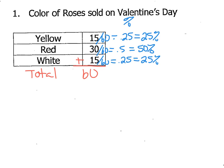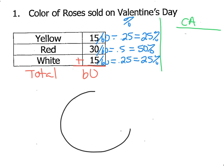After you find your percent for each category, you want to calculate your central angle. I'm going to make a column now for central angle. To calculate the central angle, we're going to find the percentage of 360 degrees — because in a circle there are 360 total degrees. So we need to figure out how many of those degrees should be allocated to each category.